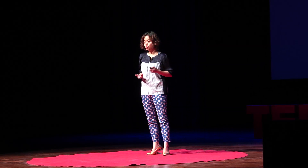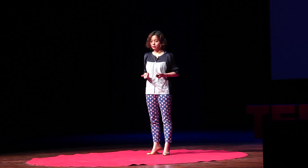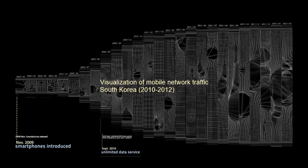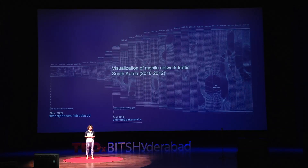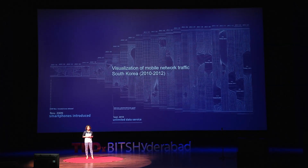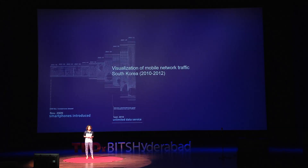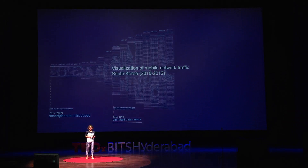And there is one other thing we should consider. This is a visualization of the mobile traffic data from 2010 to 2012 in South Korea. During that period, two major shifts happened in Korea: smartphones were introduced in late 2009, and data became unlimited in September 2010. The size of each box represents the consumption of data usage of each month.